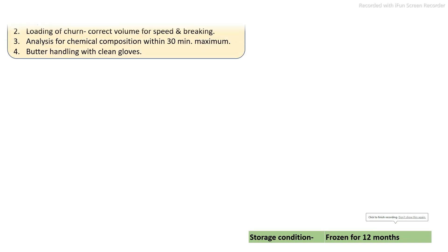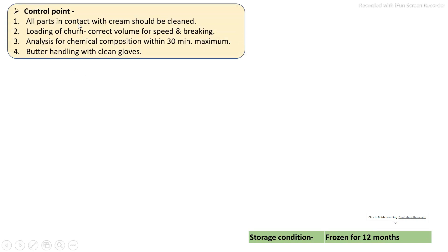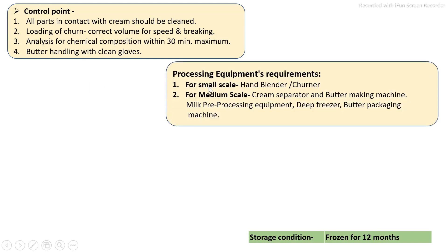These are the control points required to maintain high quality of the final product during butter processing. The processing equipment varies depending on scale. For small scale, a hand blender, churner, and milk boiling pan are required. For medium scale, the minimum machinery requirements include milk preprocessing and pasteurization unit, cream separator, continuous butter making machine, deep freezer, and butter packaging machines.